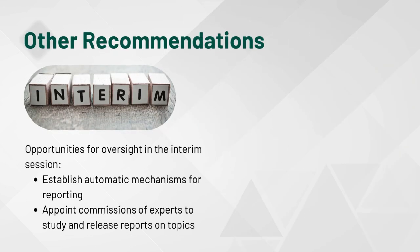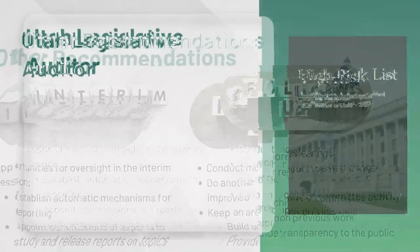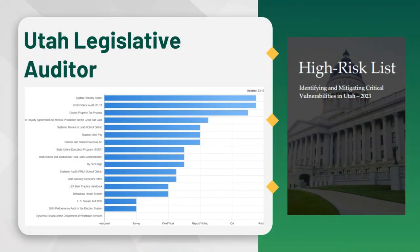The interim session is a great opportunity for oversight. Establish automatic mechanisms for reporting throughout the interim, and establish commissions of experts to study and release reports on topics. Follow-up is an essential step for great oversight — conduct more hearings, do another report after some time has passed to see if things have improved. Keep an archive of all oversight activities so the committee can build upon previous work and provide transparency to the public. In Utah, their legislative auditor's website has an archive of published reports and a bar chart showing audits in progress. The legislative auditor also publishes a high-risk list similar to the popular Government Accountability Office report.